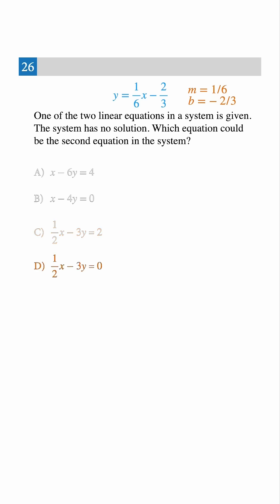Choice D, 1 half x minus 3y equals 0. Multiply everything by 2 again. That gives x minus 6y equals 0. Rewrite it as y equals 1 sixth x. Same slope, but the intercept is different. That means the lines are parallel. So the answer is choice D.